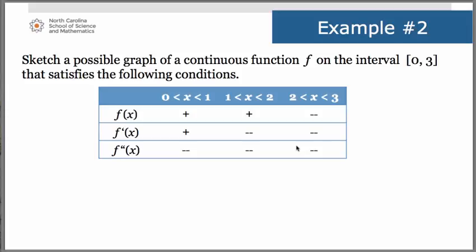Let's look at a different kind of problem where you have to draw a possible graph of a function f given certain conditions. We're given a table of sign values for f(x), f′(x), and f″(x), broken down into three intervals: 0 to 1, 1 to 2, and 2 to 3. This is essentially a sign chart. The key is to take all this information and figure out where the original function is increasing or decreasing, where it's concave up or concave down, and where inflection points, maxima, and minima occur.